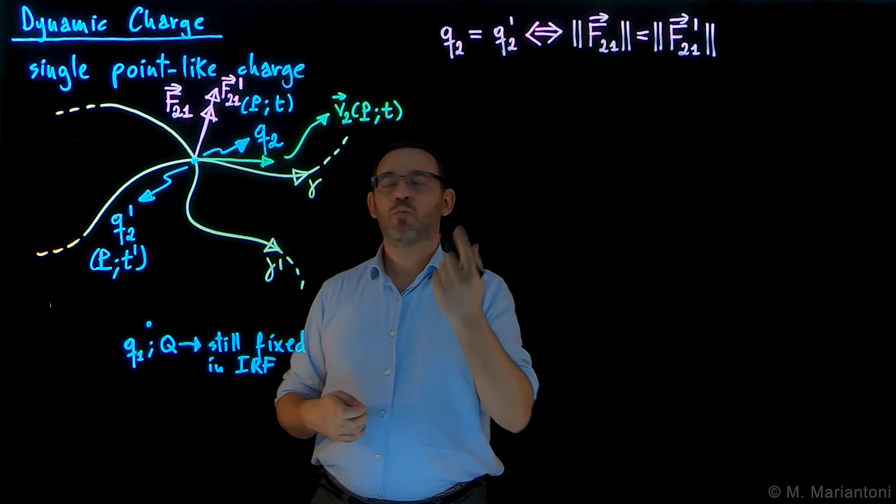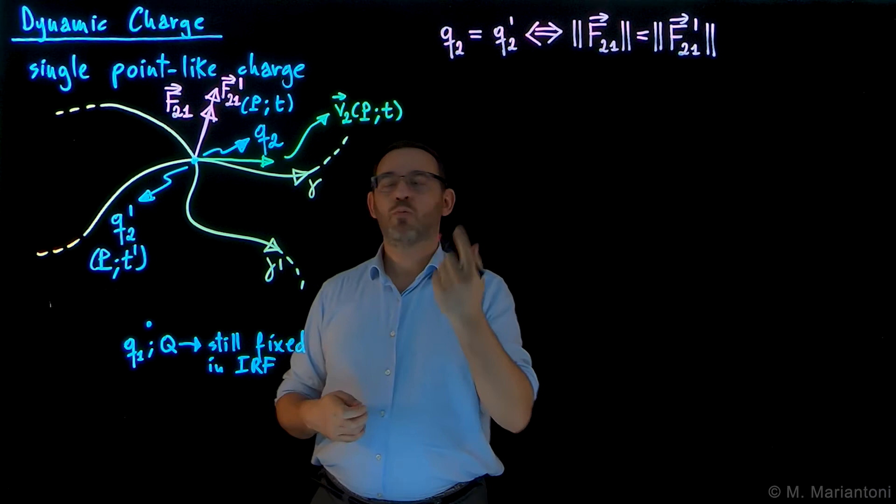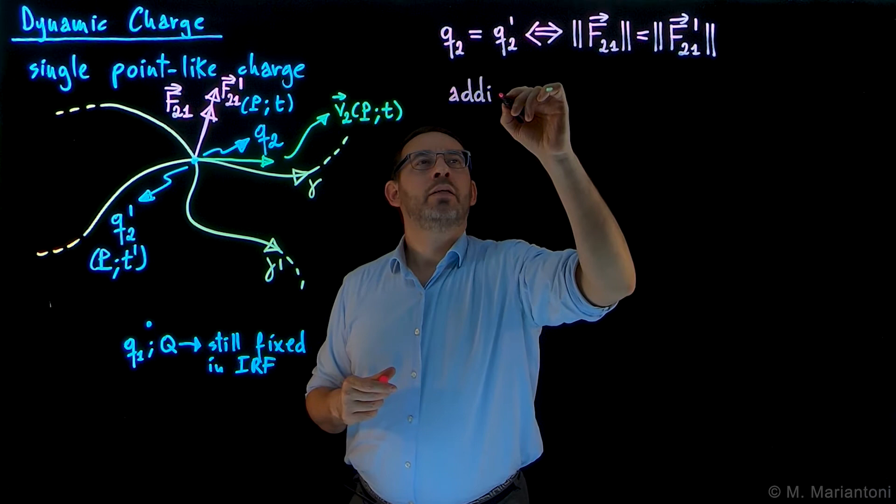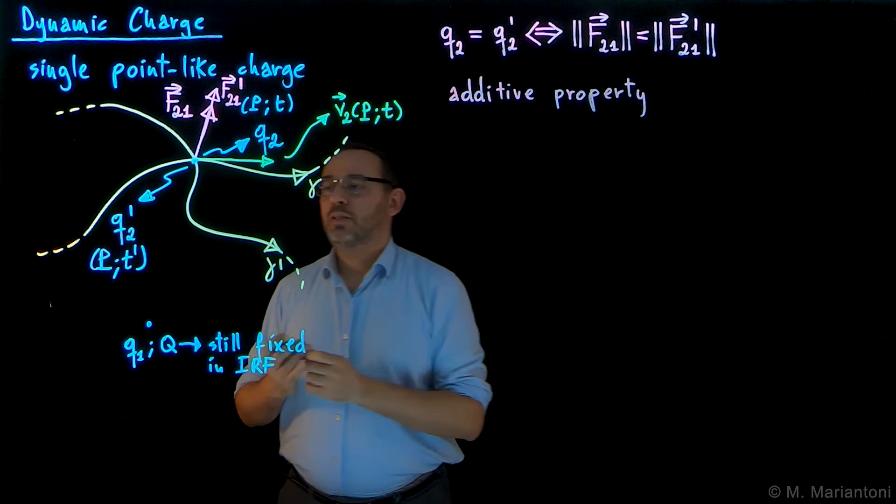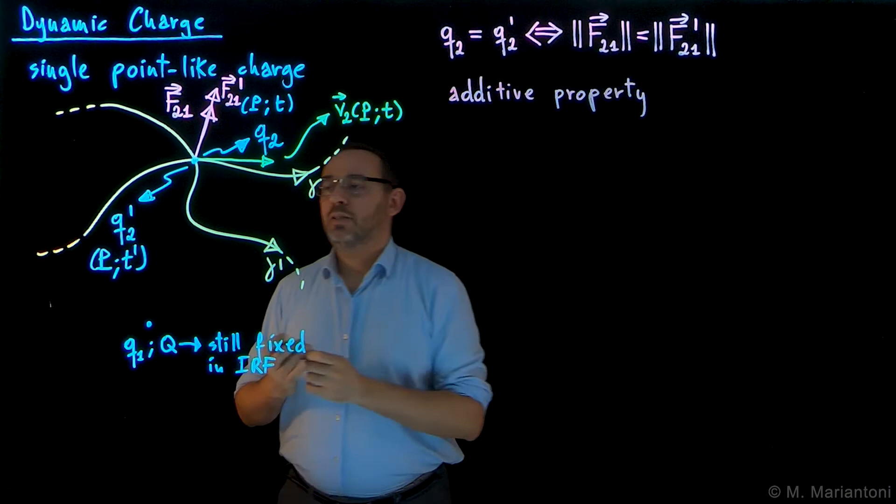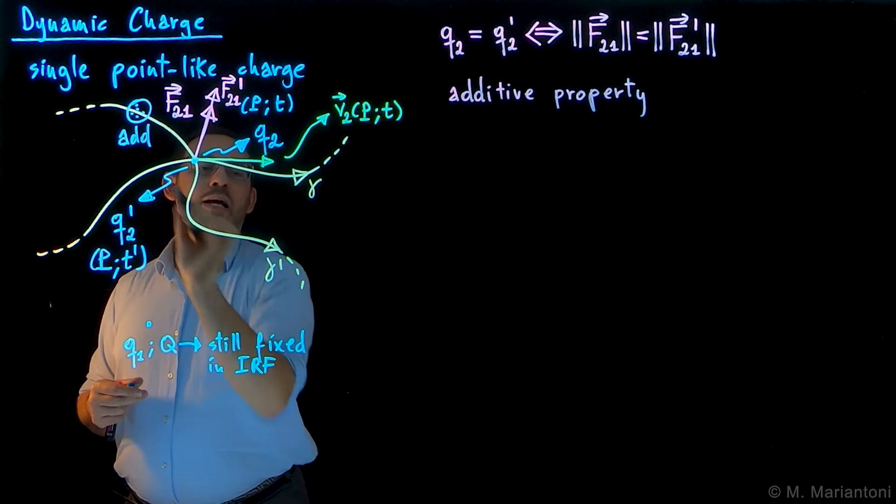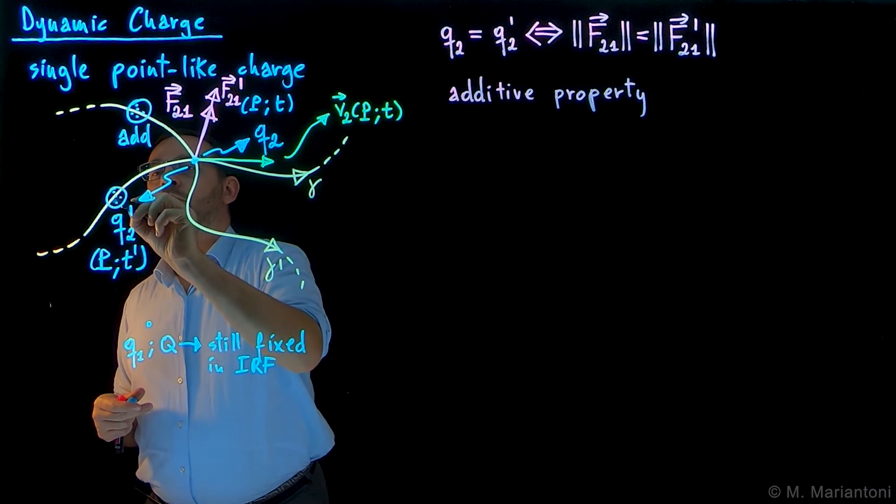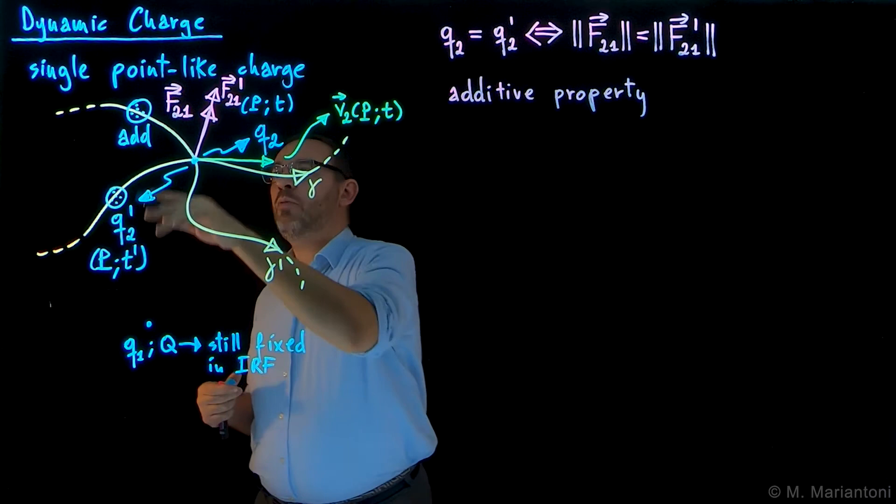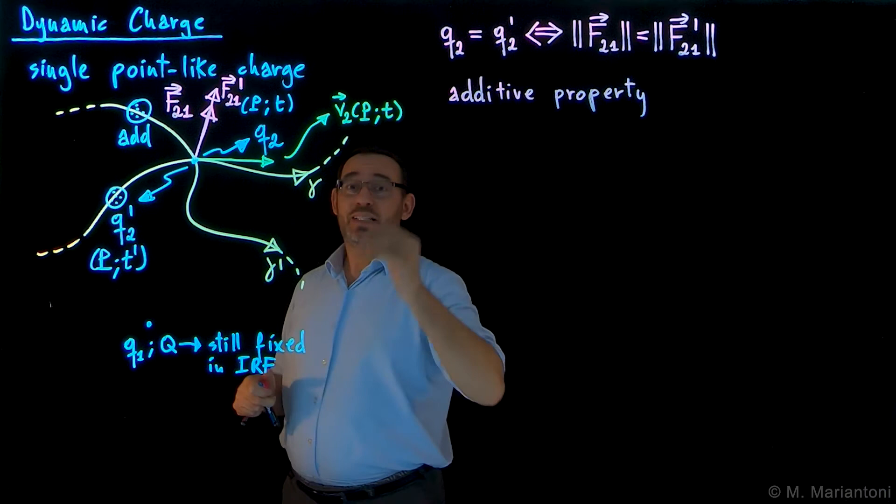As it turns out, if you take a bunch of charge particles instead of only one - you take a couple of them, or three of them - and you put them close to each other, so you add them, the concept of additive property of charge, this definition still applies. So it's not true only for a single particle, but if I have a group of one, two, three, four particles which I put together, add them together along gamma prime, and same thing along gamma, this same definition allows us to tell that this sum of charges, this addition of charges is the same. So the additive property of charge remains valid also in the dynamic case.